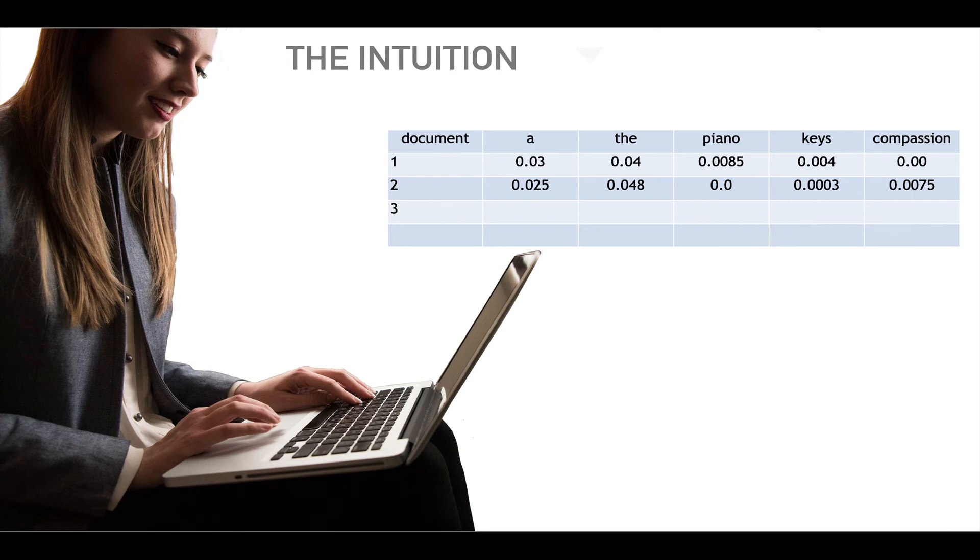Now let's take a look at that previous approach with just getting frequencies. Here's an example where document one, 3% of the document was 'a' and 4% 'the'. So those were the really high occurring words in the document, as was in document two, 2.5% of the words were 'a' and almost 5% of the words were 'the'. But it turns out these are sort of uninteresting words. They're not helping us if we're trying to make classification, probably. The more interesting words are like piano, keys, and compassion. So we'd like to up those values somehow. That's the intuition that we're interested in. What are the interesting words here?